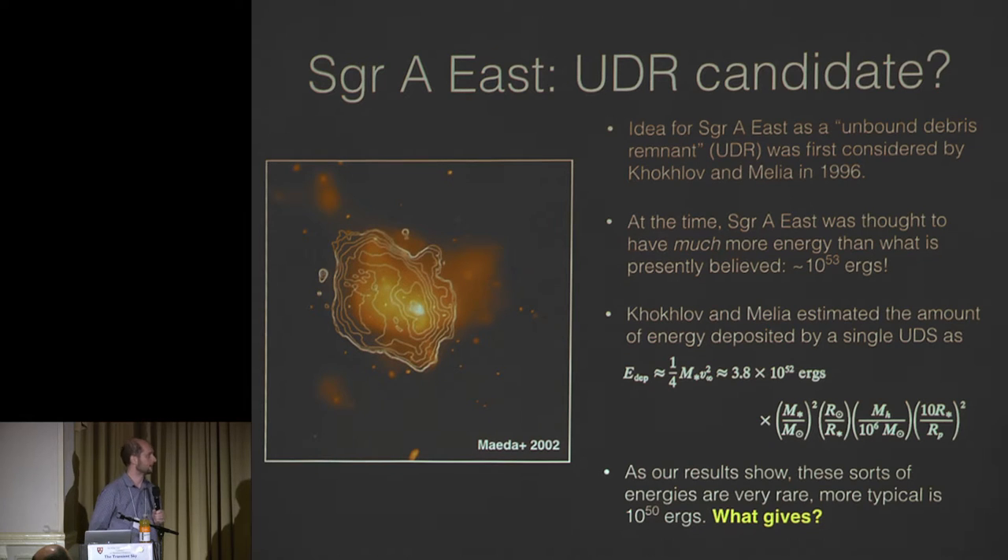So there is actually one supernova remnant sitting in the galactic center that's a pretty good candidate for this and I'm not the first person to suggest that it actually might be this mechanism producing this remnant. It was first proposed by Khokhlov and Melia in 1996. At the time they thought this thing had a ton of energy. They thought it had 10 to the 53 ergs in this cavity. The logical reasoning for that is that they saw a lot of dust being carved out in the central nucleus of the galaxy, calculated the total binding energy of that dust, they said aha we need 10 to the 53 ergs to clear this out. Then Chandra came online and actually measured the internal energy content of that remnant and found that it was something more like 10 to the 50 ergs of energy.